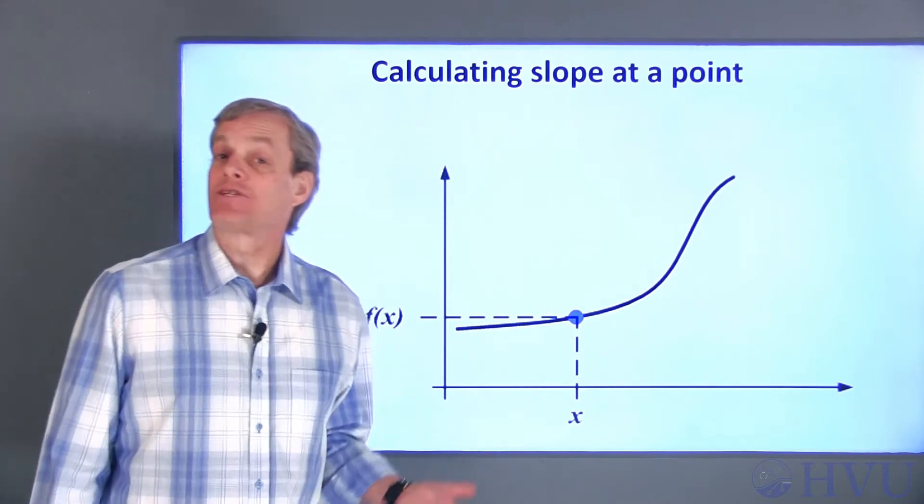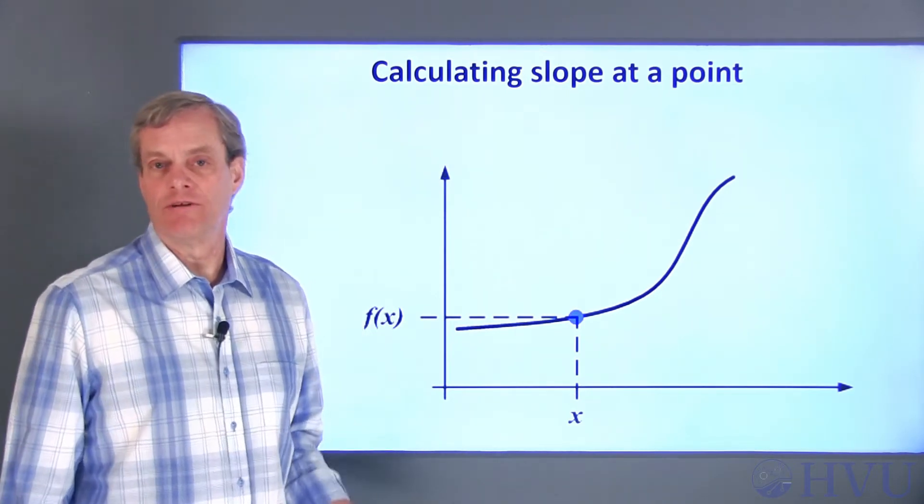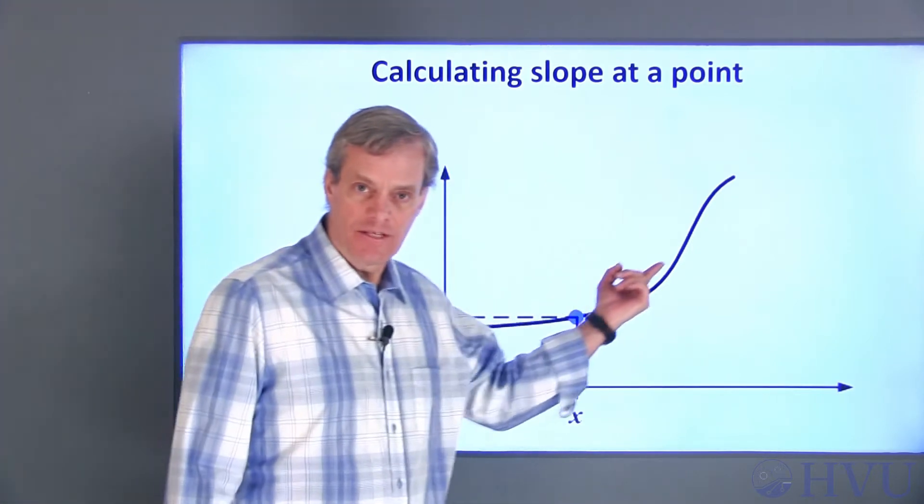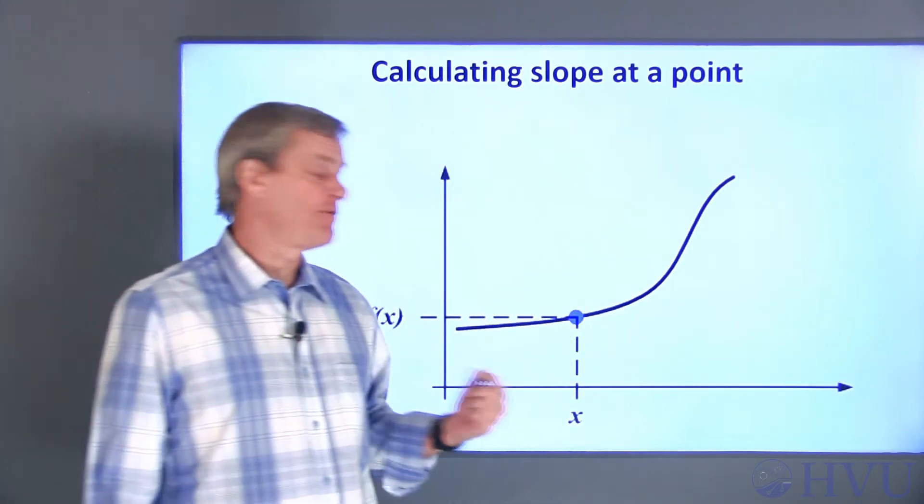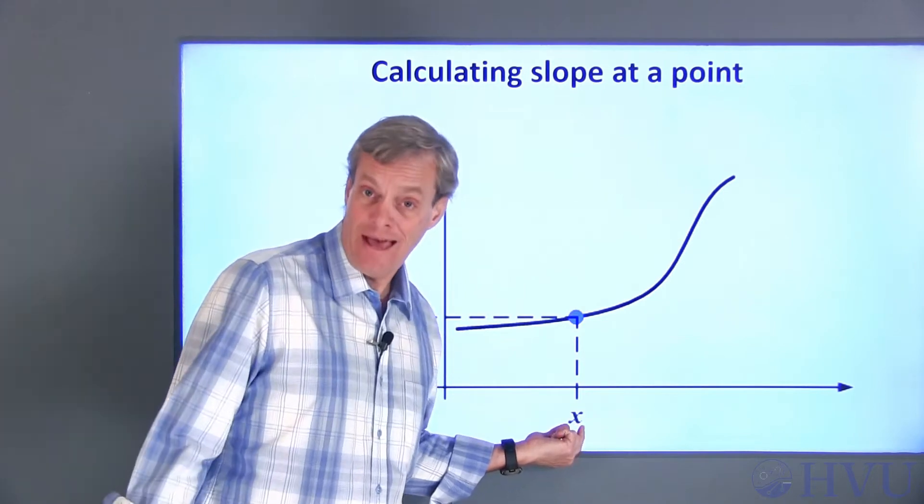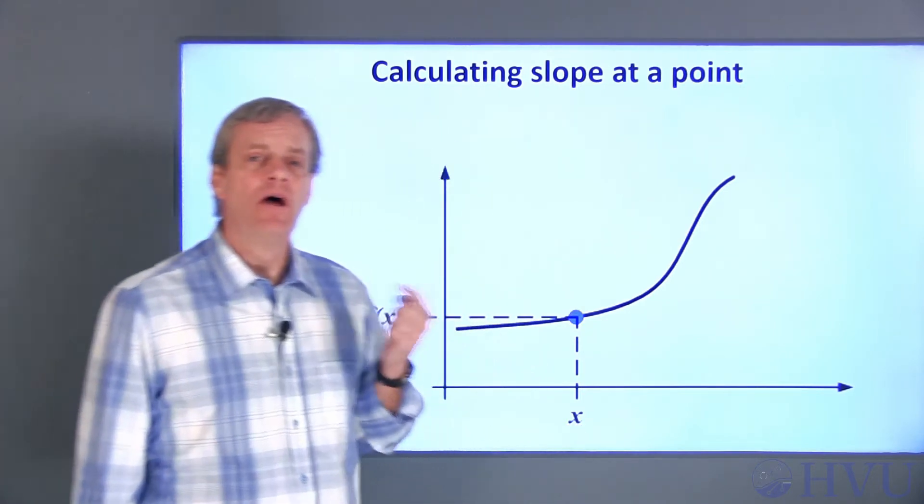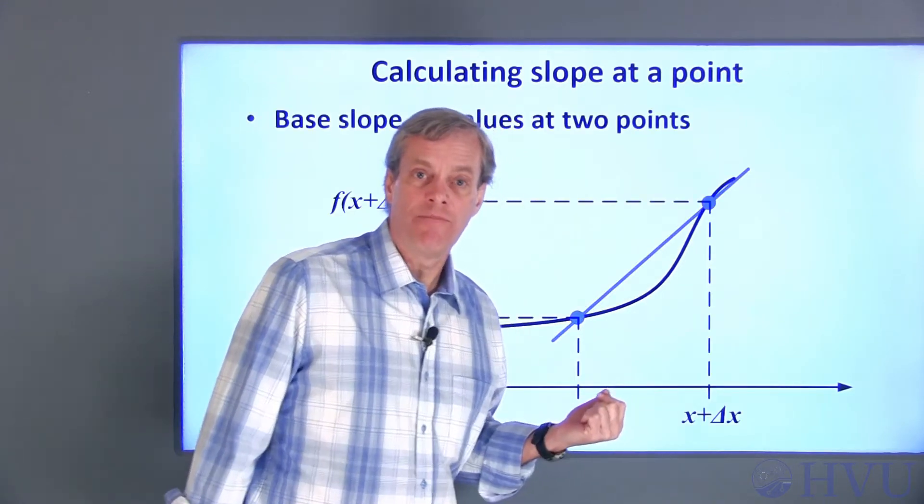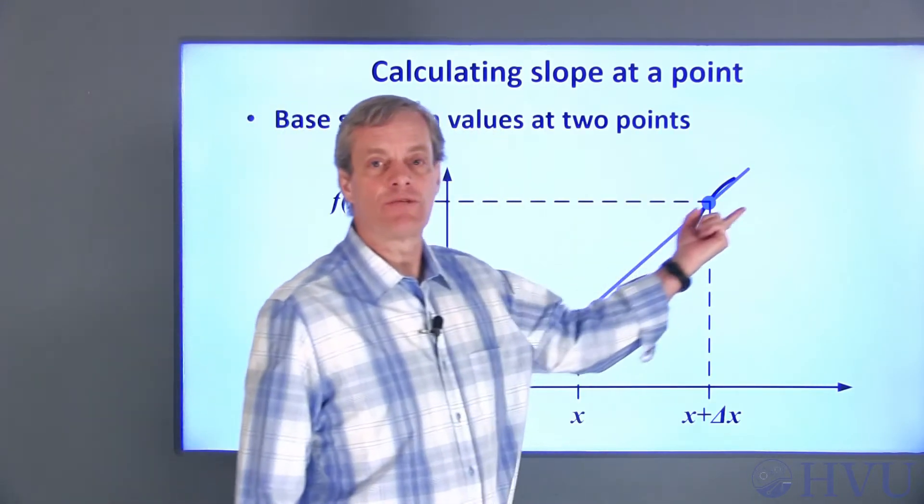Now let's talk about how to actually calculate the slope or derivative of a function. The function we're using is graphically represented by this line. We want to find the slope of this curve at some arbitrary point x on the horizontal axis. I'm going to pick another point a distance delta x away from that point and connect the two points with a straight line.